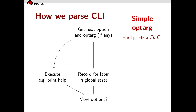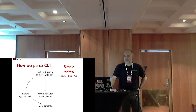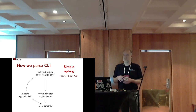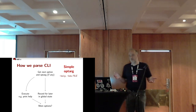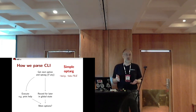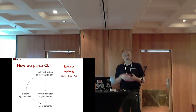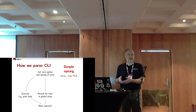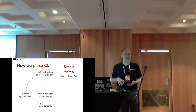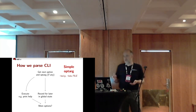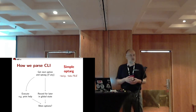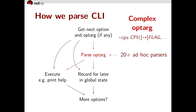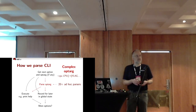Let's explore how command line option parsing works. Starting with a really simple option like dash-help with no arguments, or dash-hda with an argument — we do it the obvious way: we get the next option and option argument if any, and then we either execute it right away, say print help and exit, or we record the option for later in global state and then move on to the next option. This is how many simple programs work, and it is how QEMU works until version 0.6.